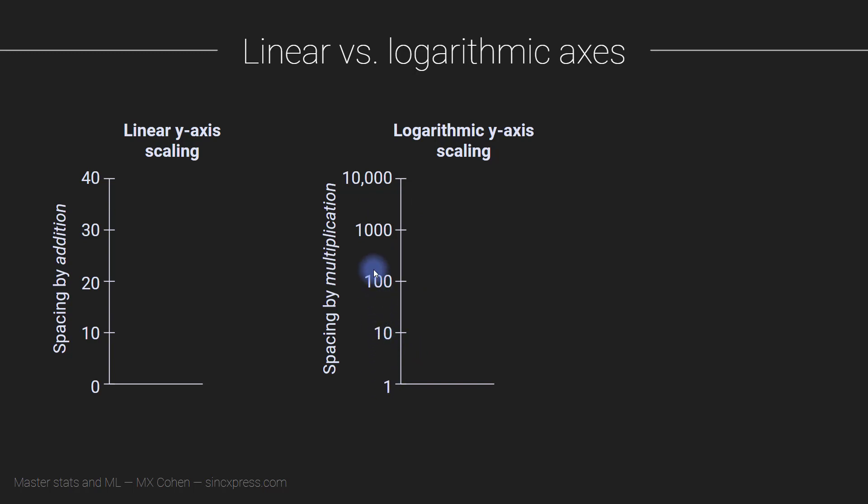Because these are growing powers of 10, and also just for visual aesthetic reasons, these numbers start to get really long. They start to take up a lot of real estate horizontally on the graph. So it's also common in log scaling, logarithmic y-axis scaling or log scaling, to use scientific notation here. So this would be 10 to the 0, 10 to the 1, 2, 3, 4, and so on. Again, the principle is the same. We are spacing by multiplication instead of spacing by addition.